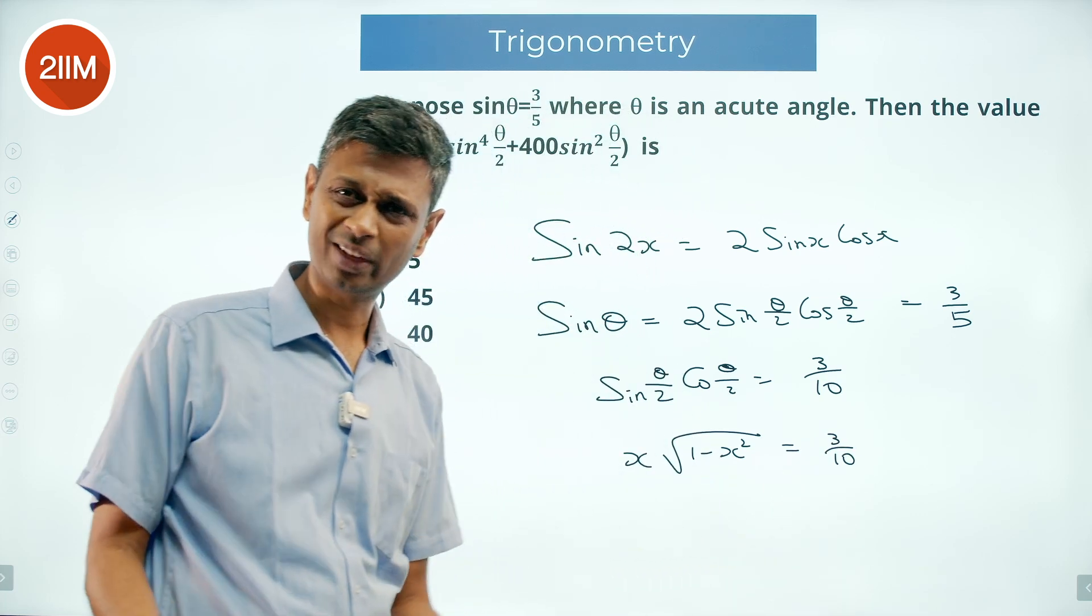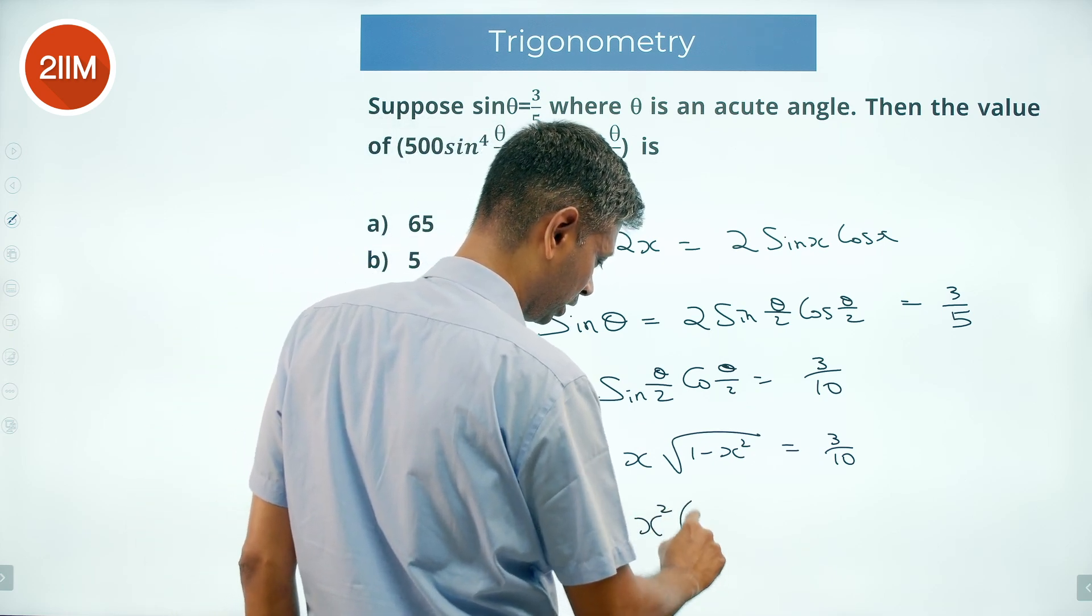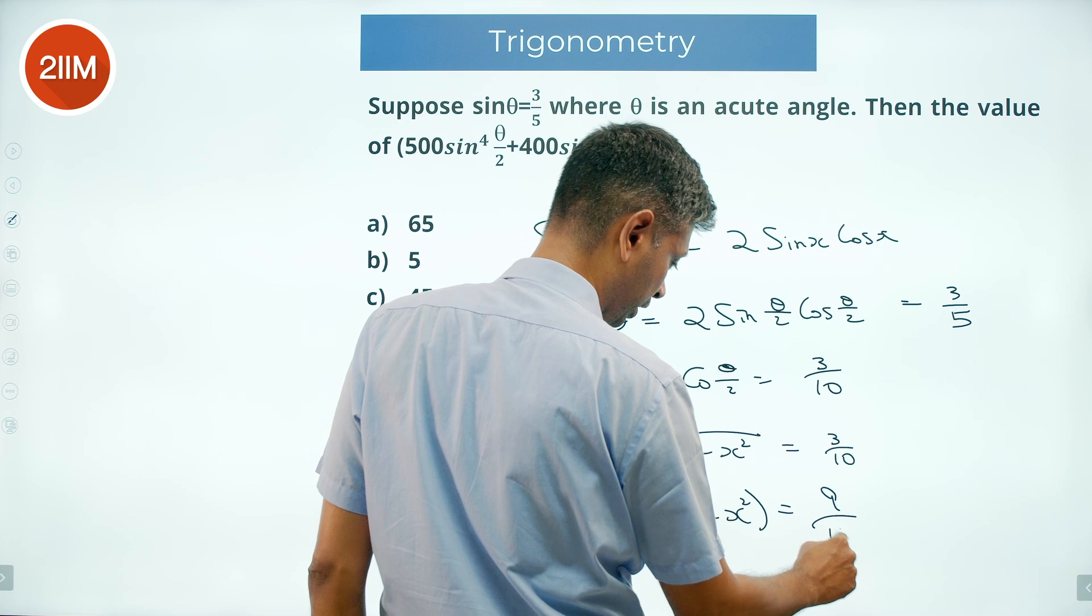My instinct is to square this. The square root thing will go away. X square into 1 minus x square is 9 by 100.